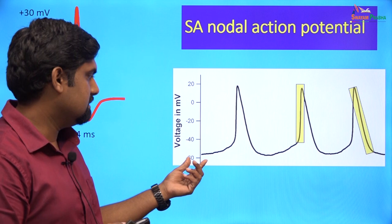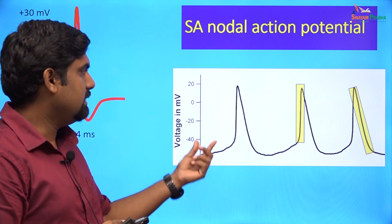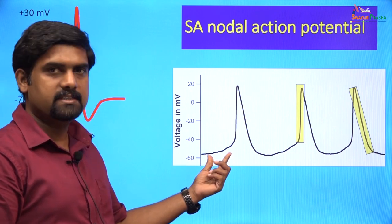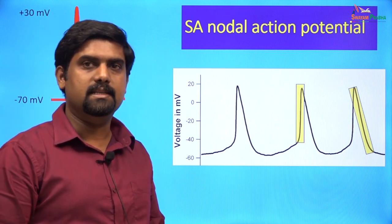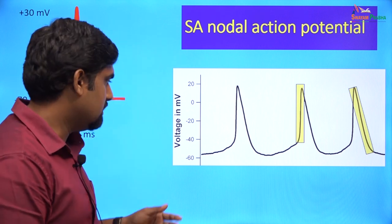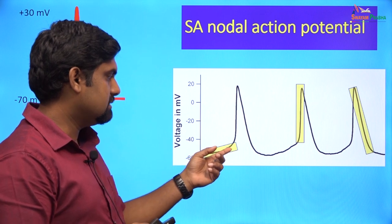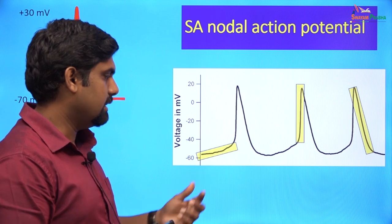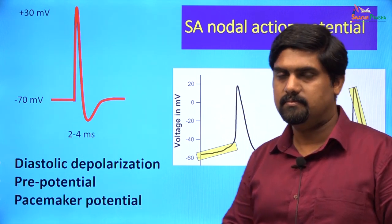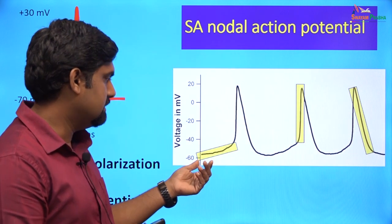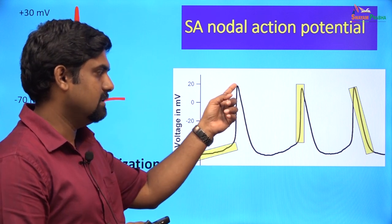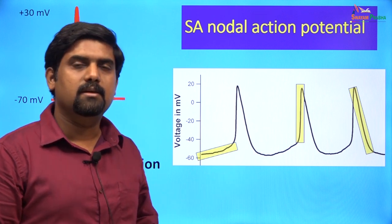Compared to neuronal cells, SA nodal cells do not have a stable resting membrane potential; during depolarization they go up to plus 20 millivolts. These cells lack the leak potassium channels and the inward rectifier potassium channels which help other cells generate a stable resting membrane potential. Instead of a stable resting membrane potential, the membrane potential drifts slowly towards threshold. This is known as slow diastolic depolarization, the prepotential, or the pacemaker potential. Around minus 60 millivolts, the cell membrane slowly depolarizes spontaneously, reaches threshold, fires an action potential, and then undergoes repolarization.